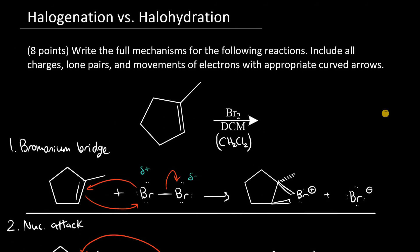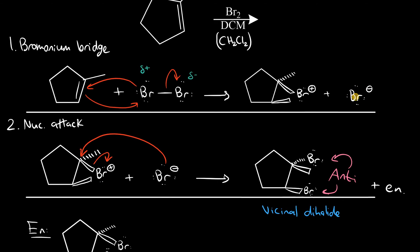In step two here, the bromide acted as a nucleophile and attacked the electrophile, which was the bromonium ion.